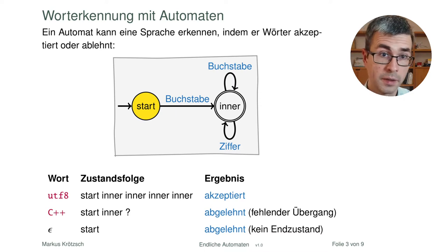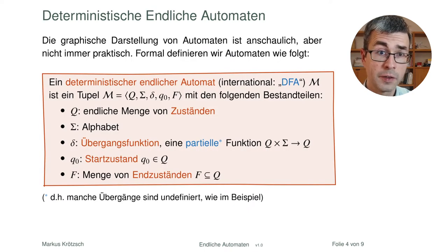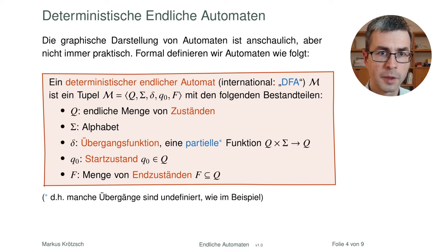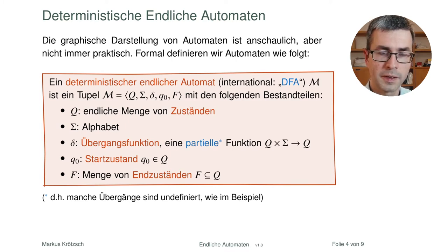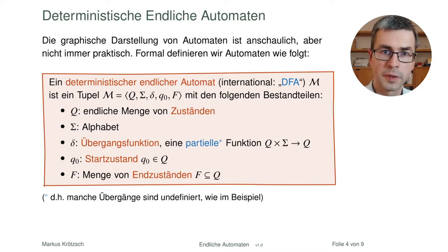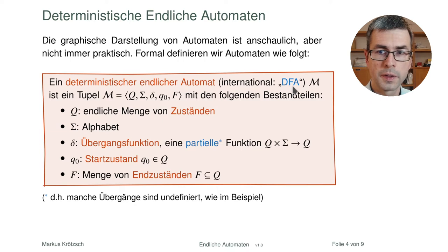Diese Darstellung als Diagramm ist zur Illustration geeignet und gibt manchmal Überblick, wenn der Automat klein ist. Aber schon bei der Resulta BS 7 würde man mit so einem Diagramm nicht mehr weit kommen. Es ist also sinnvoll, eine andere Notation zu finden, mit der man Automaten aufschreiben kann, ohne ein riesiges Diagramm zeichnen zu müssen.